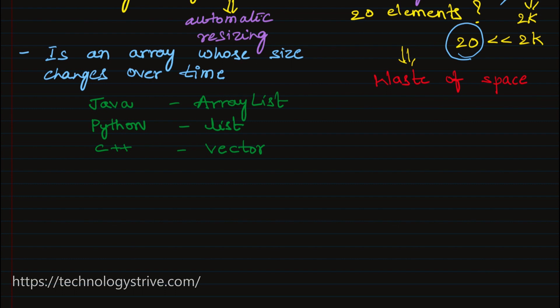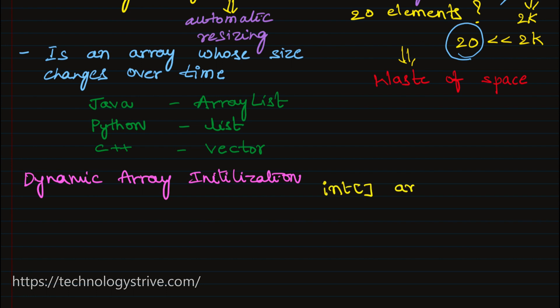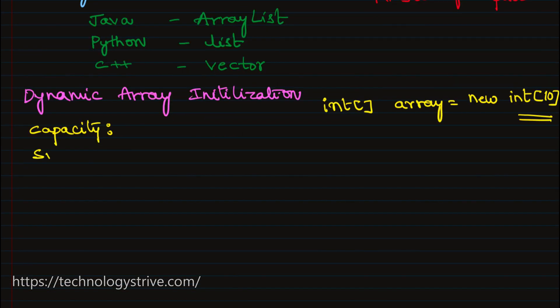Now let's see how dynamic arrays work internally through their operations. First we need to understand how to initialize a dynamic array. The initialization is exactly the same as a regular array. In Java, we write: int array = new int[10], where we provide the size. When initialized with size 10, the array occupies 10 contiguous memory locations, meaning the array can hold a maximum of 10 elements.